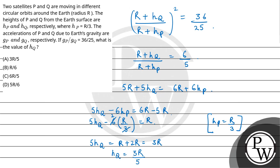So final answer is option a, 3R upon 5. I hope you understood it well, best of luck.